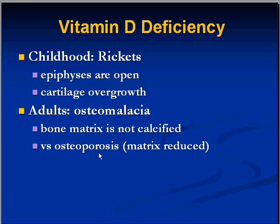In adults, epiphyses are closed and therefore the lack of mineralization into the bone matrix is what happens. Osteomalacia is different from osteoporosis. In osteoporosis you have inadequate bone mass, whereas in vitamin D deficiency osteomalacia you have bone but it is not adequately calcified.